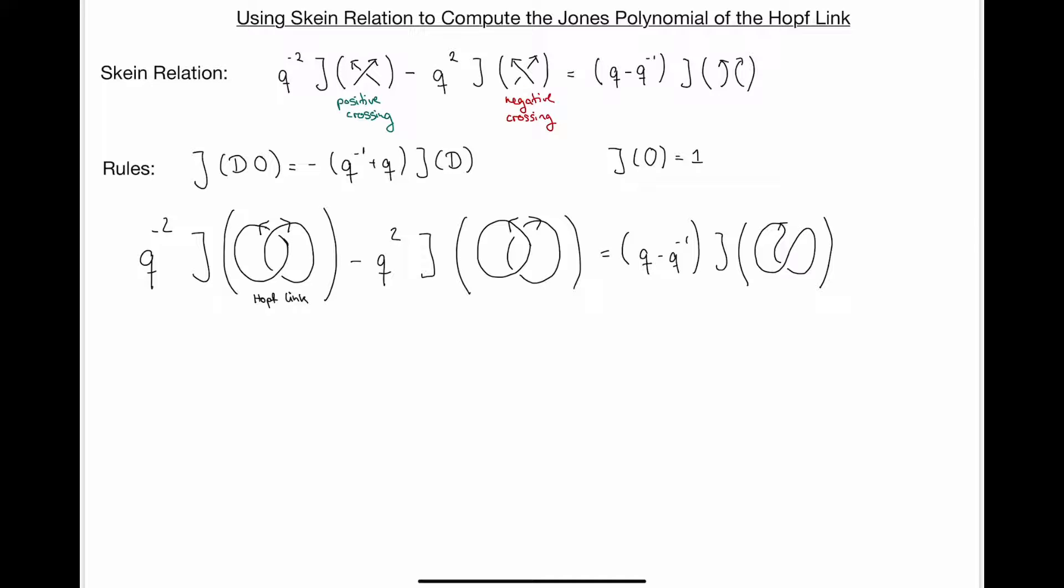Now, what do I get here? I'm not going to touch the Hopf link, but now I can compute the Jones polynomial of these two. This here is just the unknot, the twisted unknot, so this is just going to equal one. And what do I have here? Well, I have two unknots. So one of them I can pull out via this rule up here. So I can pull it out by adding a minus q inverse plus q.